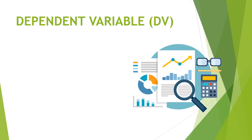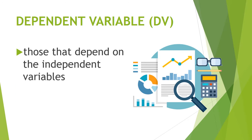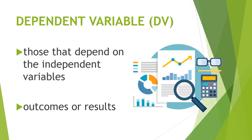The next one is the dependent variable, or DV. Dependent variables are those variables that are actually dependent on your IV. Simply put, when we are talking about dependent variables, they are the outcome variables or the result variables.